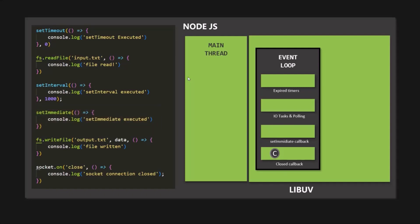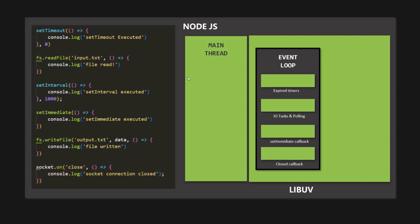Once all the callback functions in the third phase are executed, we move to the fourth phase. In this phase, all the closed callbacks are stored — for example, when a web server or web socket shuts down. Any callback attached to a close event is executed in this phase. When a web server or socket shuts down, a close event is emitted, and the callback function attached to that event is stored in the callback queue of the fourth phase and eventually executed in the main thread, or offloaded to the thread pool for heavy tasks.